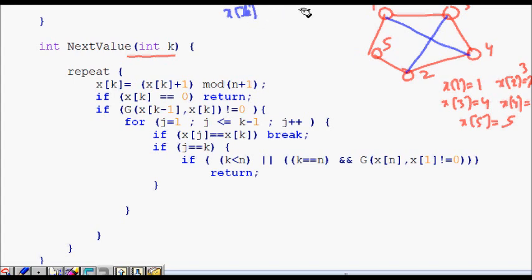when we are assigning the xk or the kth node in the cycle, we try with xk is equal to 1, 2, 3, and till n, all the possibilities. What are the constraints for the Hamiltonian cycle?